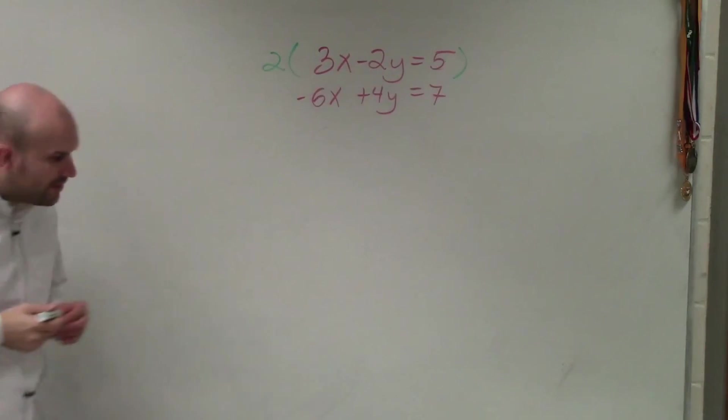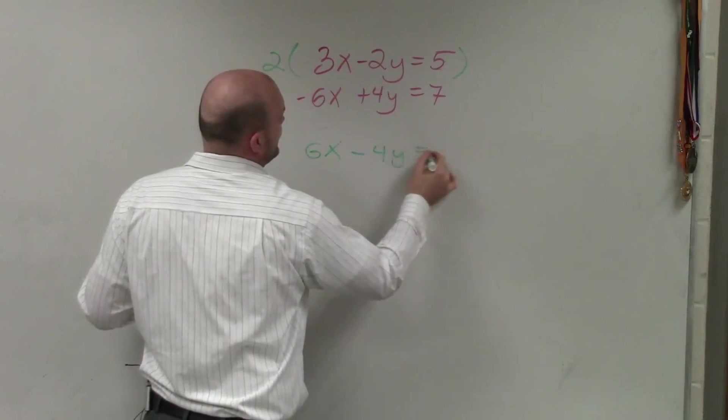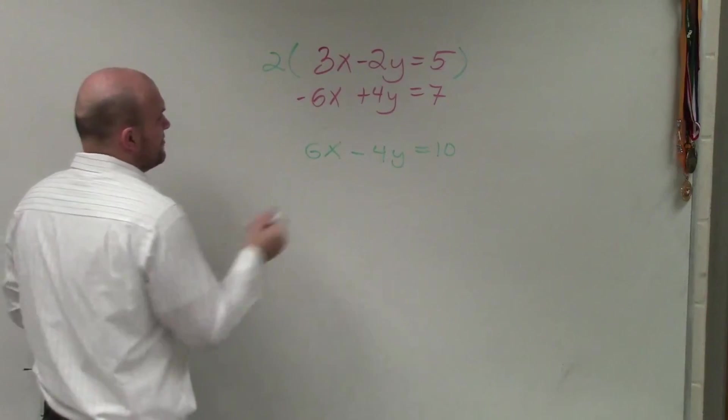So I multiply the top equation by 2, and when I do that, I obtain 6x minus 4y equals 10. And then my bottom equation is going to remain the same.